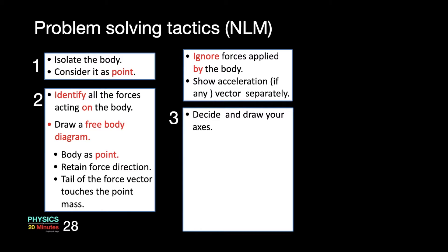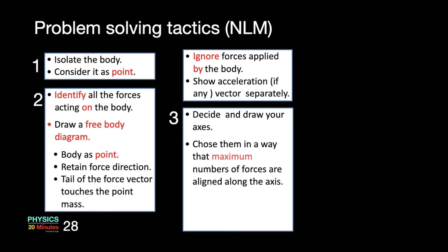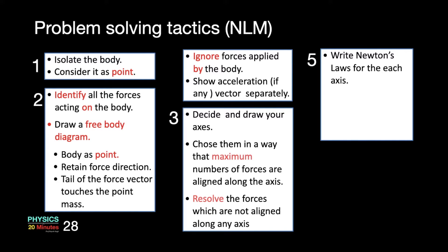Third stage: once you have drawn the free body diagram, you decide your coordinate axis and draw them. Choose the coordinate axis such that the maximum number of forces are aligned along the axis — in most problems this strategy will work, though in a few odd problems it may not. Any force vector which is not aligned along any axis, we vectorially resolve that force vector along the axis. Once all the forces are drawn along x, y, and z axes, we can write Newton's laws for each axis independently: sigma Fx = max, sigma Fy = may, and sigma Fz = maz, where ax, ay, and az are the three components of acceleration along x, y, and z axes.